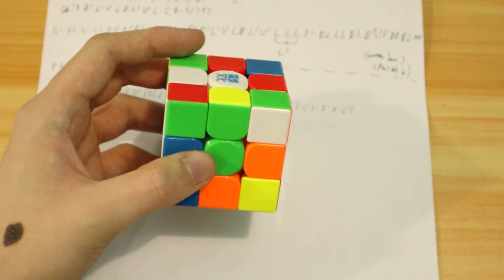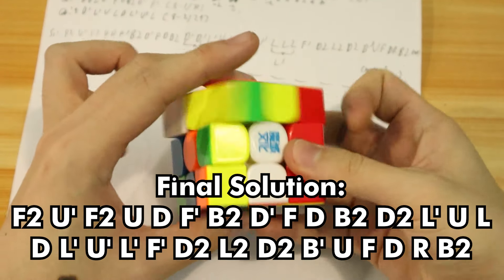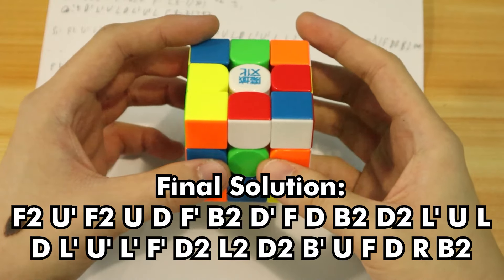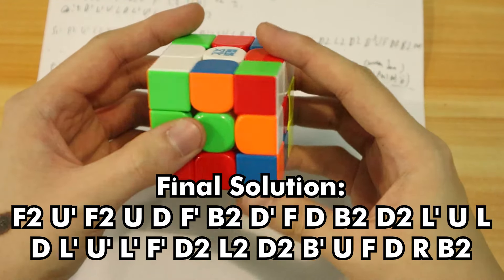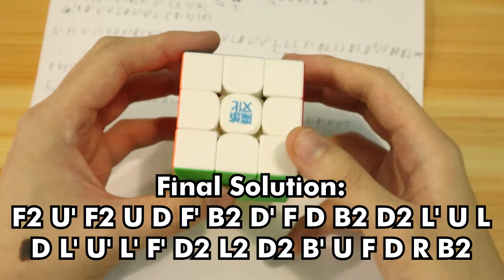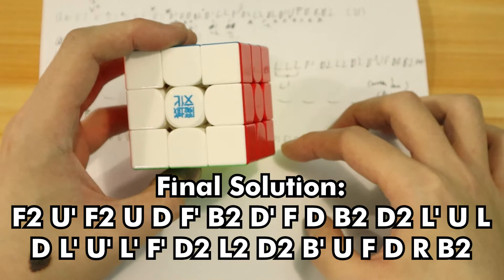So the final solution would be F2 U' F2 U D F' D' F' D' F' D' D' D2 L' U L D L' U L' F D2 L2 D2 B' U F D R D2. And that solves the Rubik's Cube in less than 30 moves.